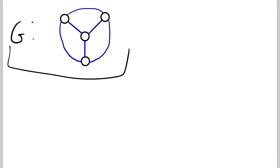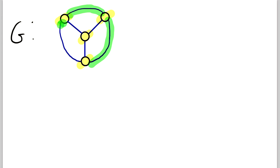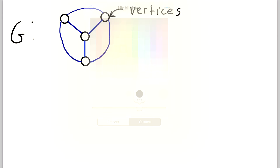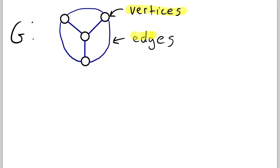Here is an example of a graph called G. And what makes up this graph? Well, it's made of two types of objects. It's made of these things called vertices, and these things here that connect pairs of vertices, called edges. Those black circles are called vertices — they're often called nodes also, but we're going to call them vertices. And the blue lines that join pairs of vertices are called edges.